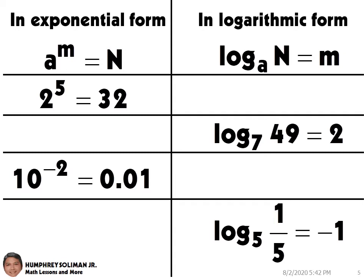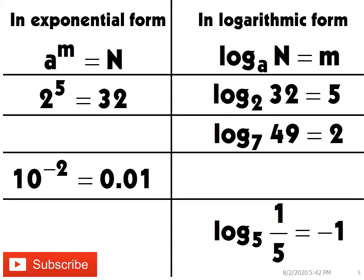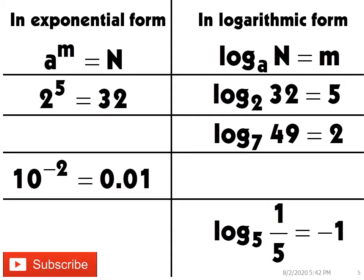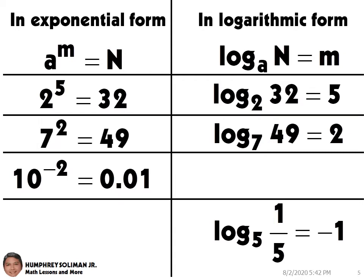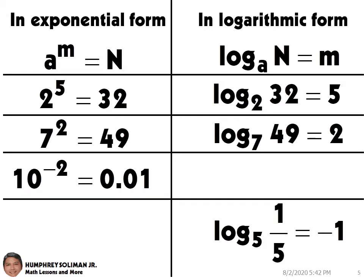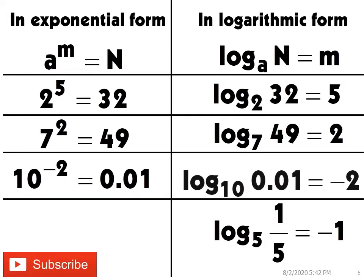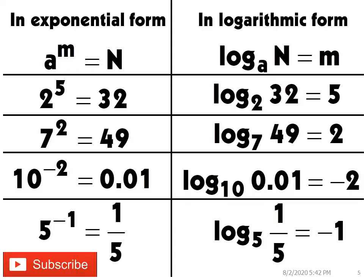2 raised to 5 equals 32. This is log base 2 of 32 equals 5. Log base 7 of 49 equals 2. This is 7 squared equals 49. 10 raised to negative 2 equals 0.01. This is log base 10 of 0.01 equals negative 2. Log base 5 of 1 over 5 equals negative 1. This is 5 raised to negative 1 equals 1 over 5.